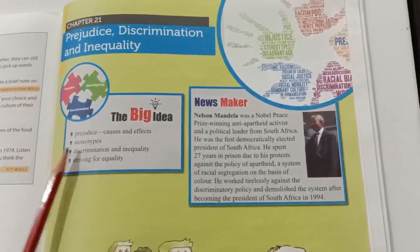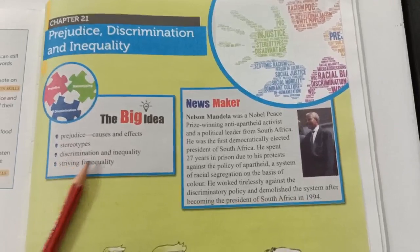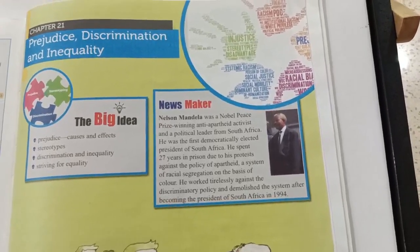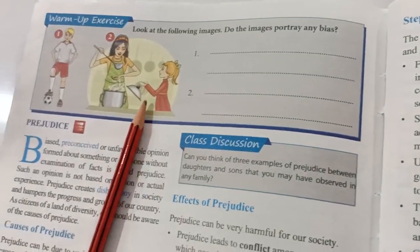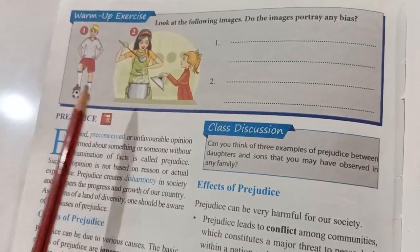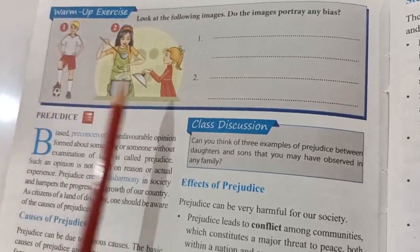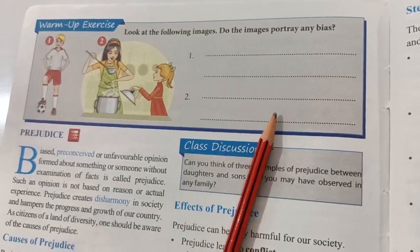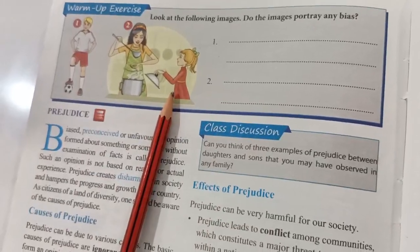In this chapter, what are we going to study? Prejudice causes and effects. Before doing that, I want you to indulge yourself in a warm-up activity on page number 180. You can see two images there — where the girl is helping her mother in cooking, and the boy is playing football. Do the images portray any biasness? You have to look at the biasness and do this activity on your own, and then we'll discuss it in the online class.